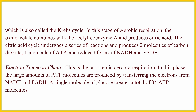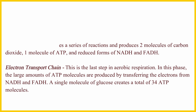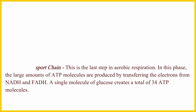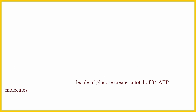The electron transport chain is the last step in aerobic respiration. In this phase, large amounts of ATP molecules are produced by transferring the electrons from NAD and FAD. A single molecule of glucose creates a total of 34 ATP molecules.